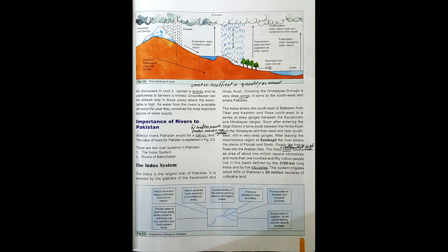As discussed in Unit 2, rainfall is scanty — small or insufficient in quantity — and its usefulness to farmers is limited. Groundwater can be utilized only in those areas where the water table is high. As water from the rivers is available all around the year, they constitute the most important source of water supply. Without rivers, Pakistan would be a barren land too poor to produce much vegetation. The value of rivers to Pakistan is explained in Figure 3.3. There are two river systems in Pakistan: one, the Indus System; and two, the rivers of Balochistan.